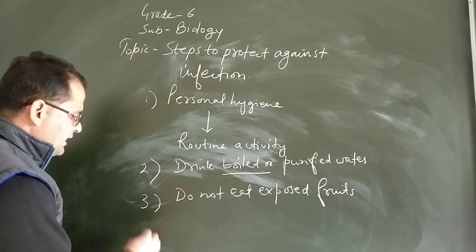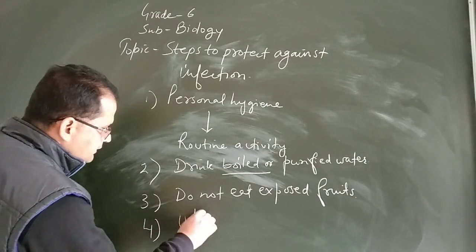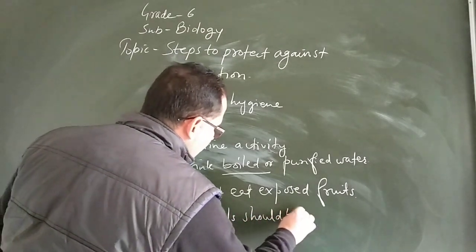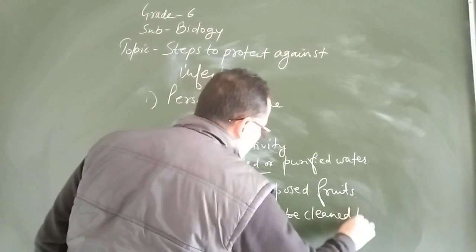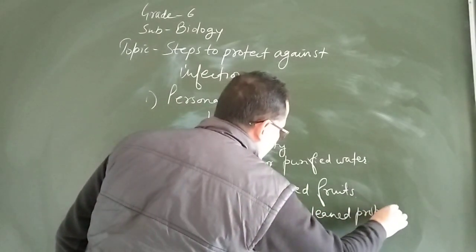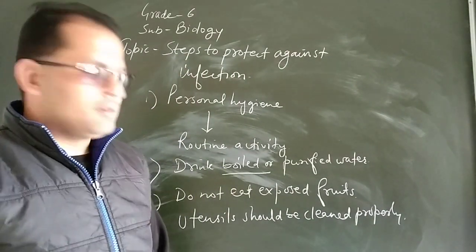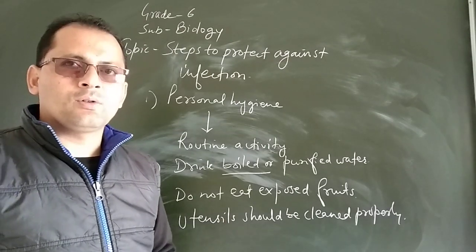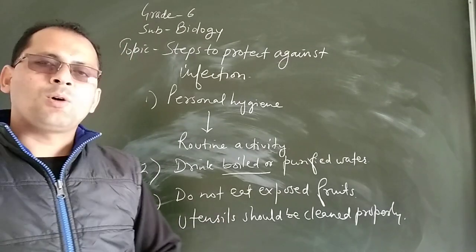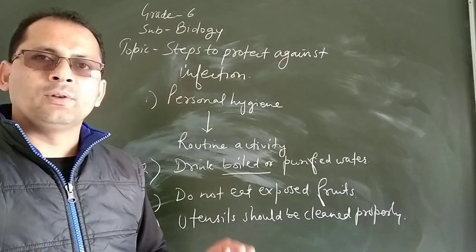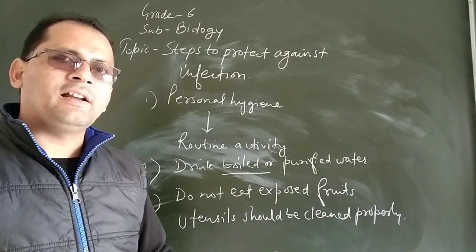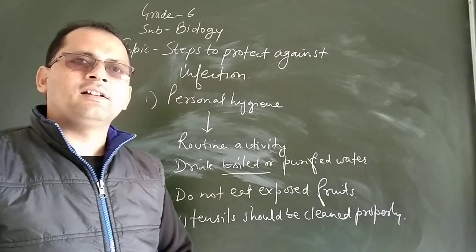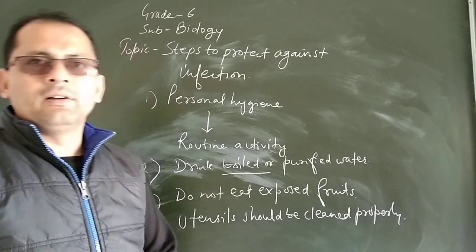The next point is utensils — utensils should be cleaned properly before taking a meal. If you do not clean the utensils properly, germs will grow on them. Once you start eating from germ-contaminated utensils, the germs will enter your body along with the food and make you diseased.